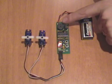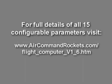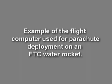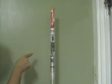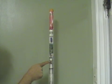Turn it off when you're finished. Here we have an FTC rocket with version 1.6 of the flight computer, servo motor, altimeter, and batteries. The parachute is on top.